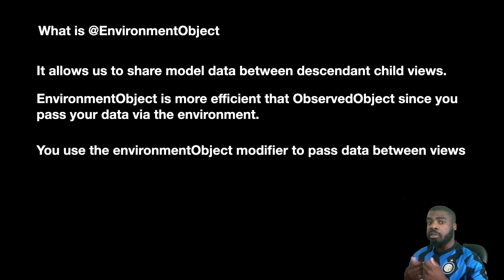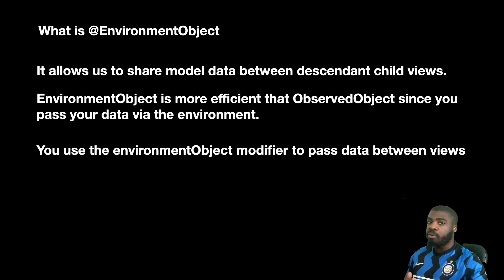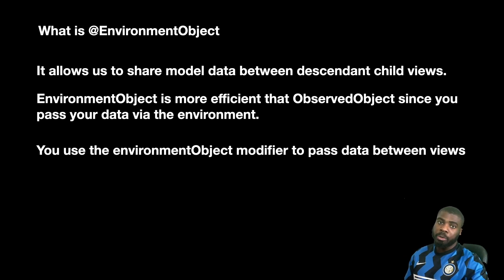In order to actually do that, you need to use the environment object on the parent, and any child views marked with environment objects for that type can access that data and use the observable objects to have a read or write to the data. We're going to jump into a practical example now and see how environment object works and also a use case where you could use it.